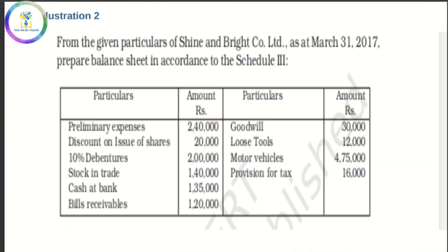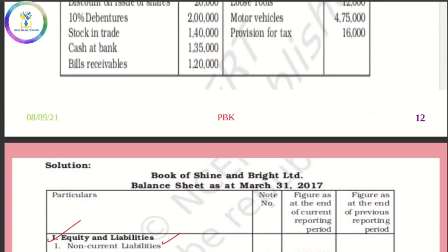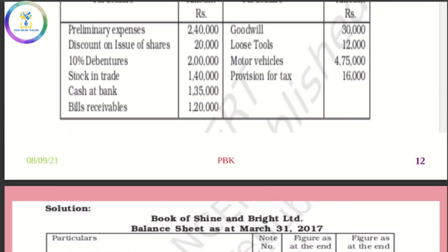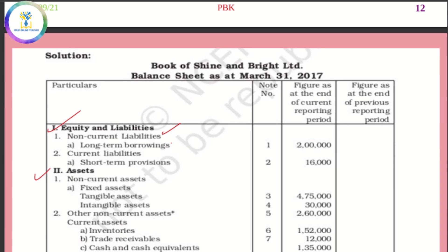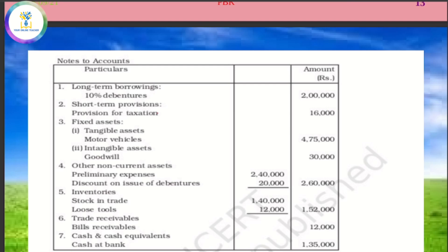If you have a format for the balance sheet, you don't have to prepare it yourself. The format covers equity and liabilities, assets, non-current liabilities, and long-term borrowings including debentures. Short-term provisions include provision for taxation. Fixed assets include tangible assets and intangible assets like goodwill. Other current assets include preliminary expenses and discount on issue of debentures.